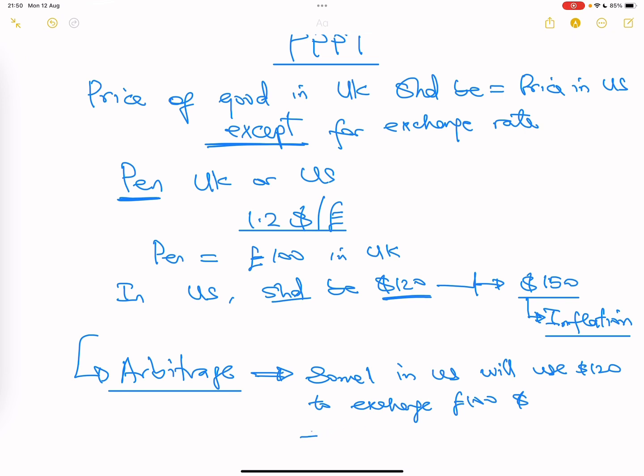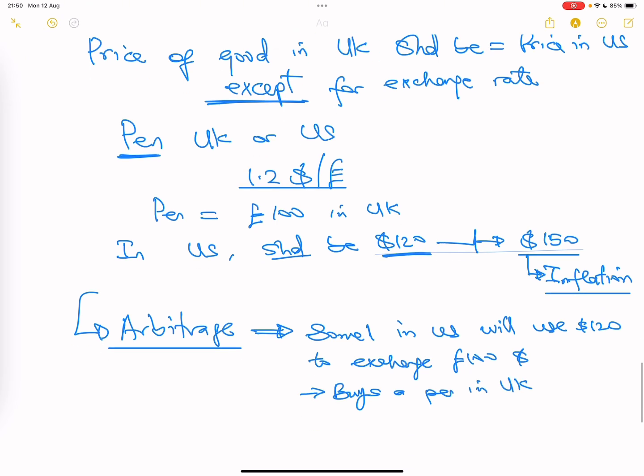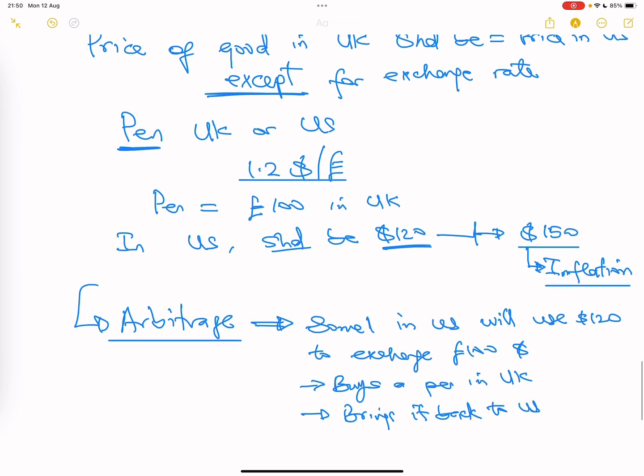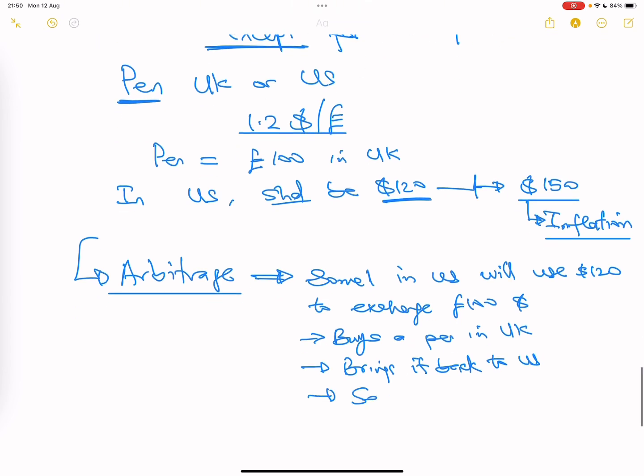And what does it do? Buys a pen in UK, then brings it back to US and sells at $150. So the guy has only used $120 to make $150, and what has he made? Profit of $30. This is called arbitraging.